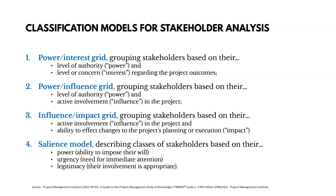The influence and impact grid tracks active involvement — their influence in the project, how actively involved they are — and then the ability to affect changes to the project's planning or execution. The salience model combines a few things: the power of a stakeholder (their ability to impose their will), the urgency they have (their need for immediate attention), and their legitimacy (whether or not their involvement is appropriate). These grids are the methods we use to classify our stakeholders and help us prioritize and define how we engage with them.